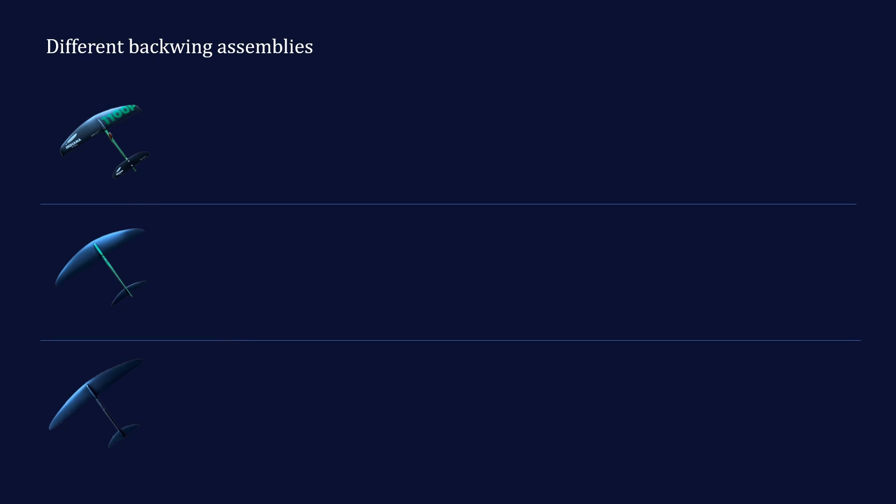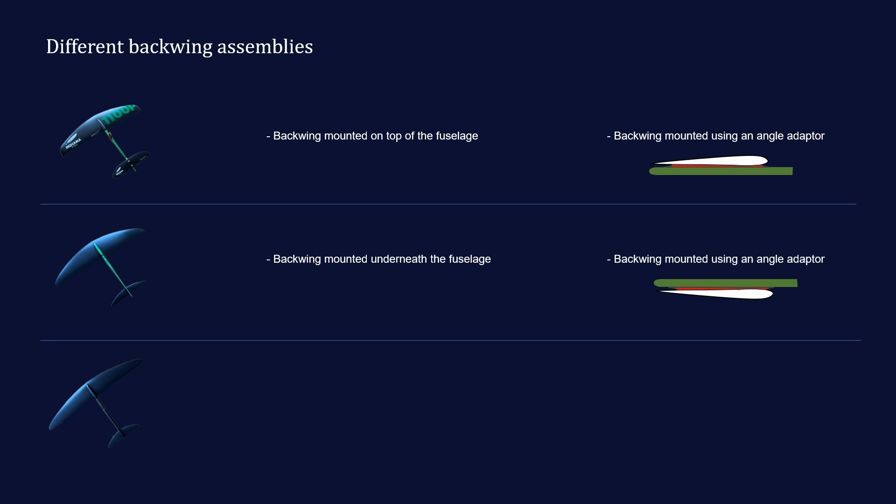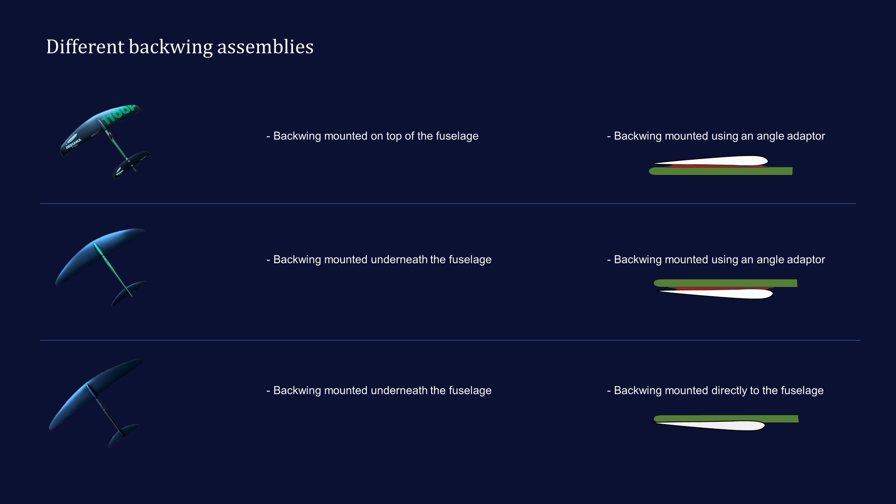In some setups, the back wing is mounted on top of the fuselage. In addition to that, some setups also use the so-called angle adapter between the fuselage and the back wing. However, there are also setups where the back wing is mounted underneath the fuselage. Also some of those setups are assembled with an angle adapter. When you plan to do a shimming on your foil, you must pay attention how your setup is assembled, so that you will get the targeted result by adding a shim.